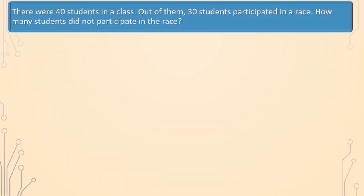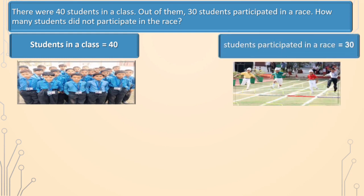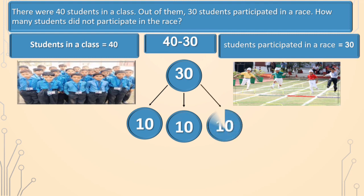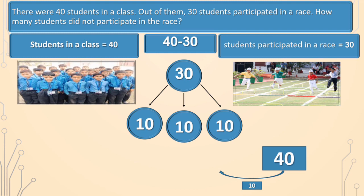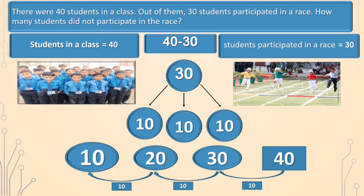Here we have another method to solve this sum. Students in class is equal to 40. Students participated in a race is equal to 30. We will find the number of students who did not participate in the race. We will subtract 30 from 40. Split 30 into 3 parts: 10, 10, and 10. 40 minus 10 is equal to 30. 30 minus 10 is equal to 20. 20 minus 10 is equal to 10. So, total students were 40, 30 participated in the race, and 10 students did not participate.